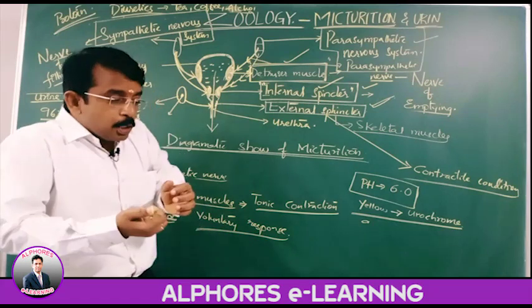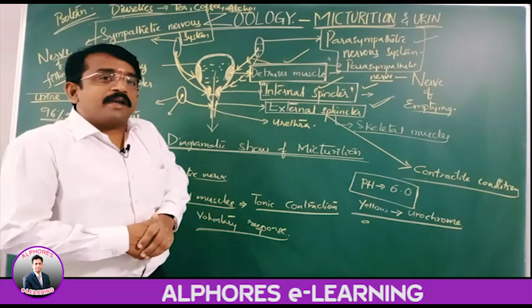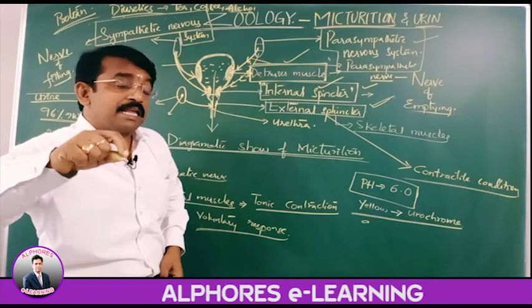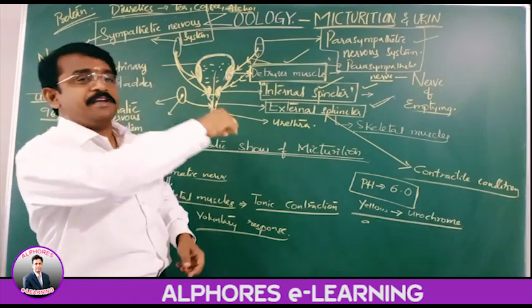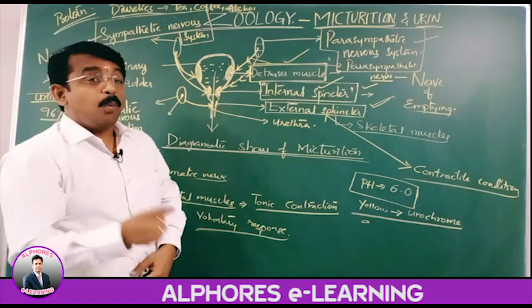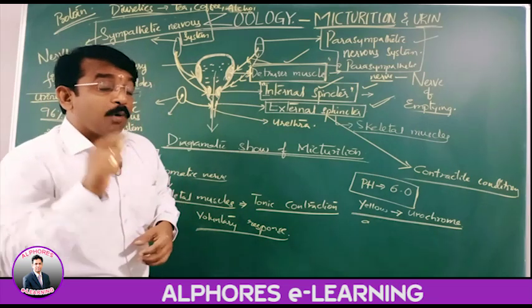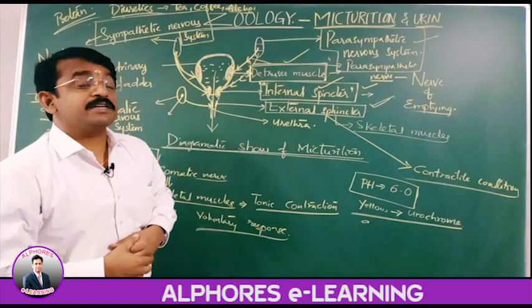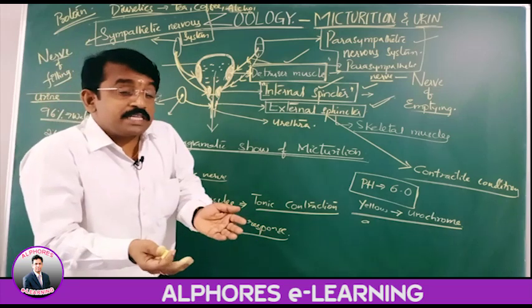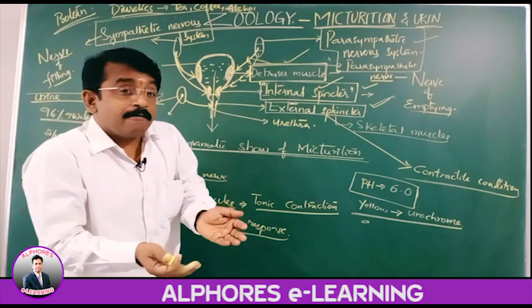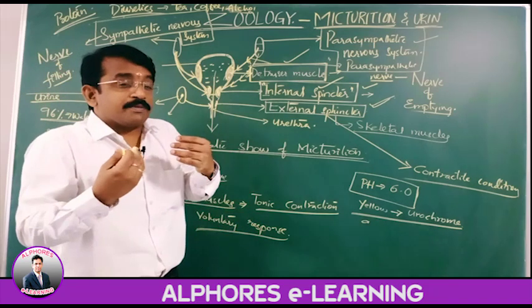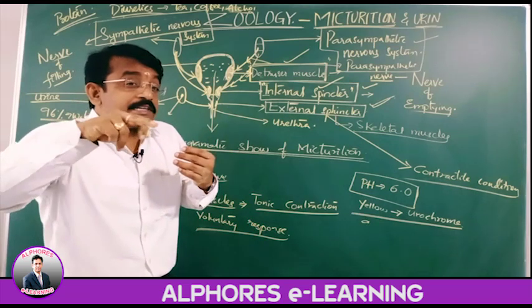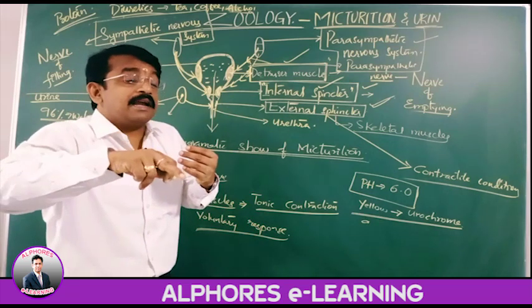Alcohol decreases the level of ADH. The role of ADH — vasopressin — is for water reabsorption. So alcohol causes a decrease in ADH.